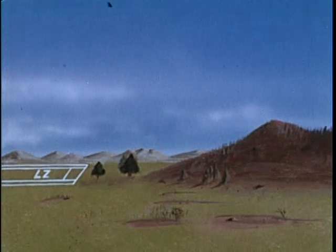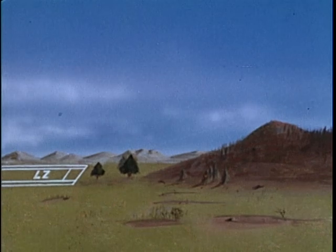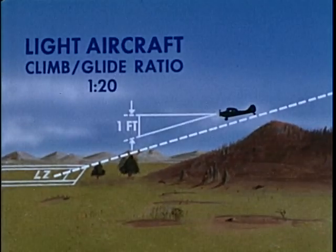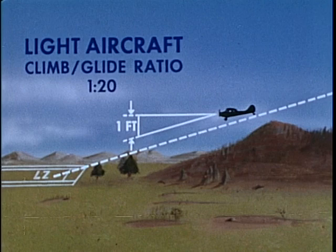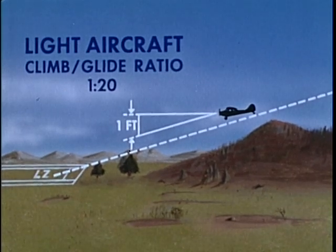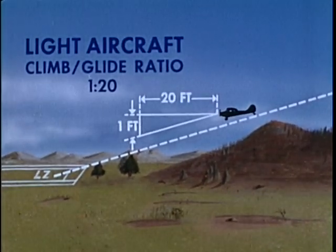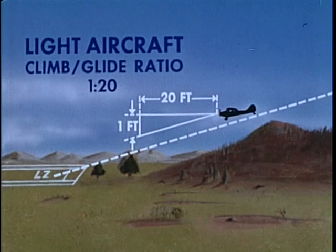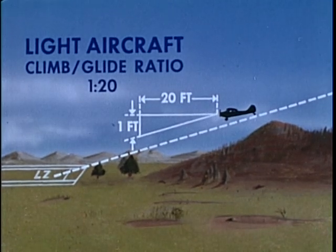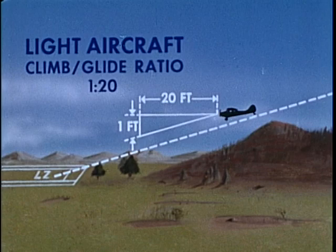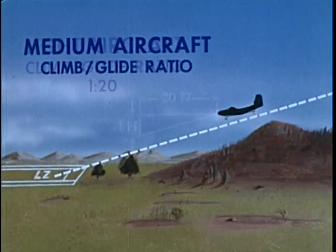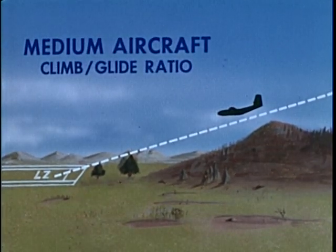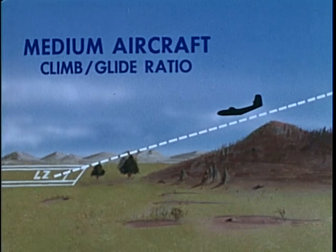Also to be considered are the approach and takeoff clearances, which are based on the climb and glide characteristics of the aircraft. For light aircraft, the ratio is 1 to 20 — 1 foot of gain or loss of altitude for every 20 feet of horizontal distance traveled. Since our present missions will mostly concern resupply of the partisan forces, we are interested in medium aircraft characteristics. The climb-glide ratio for this type of aircraft is 1 to 40.